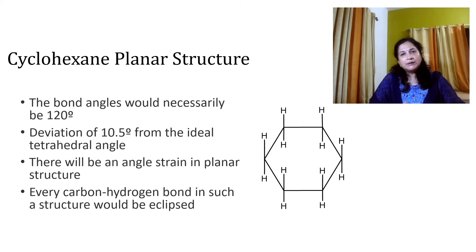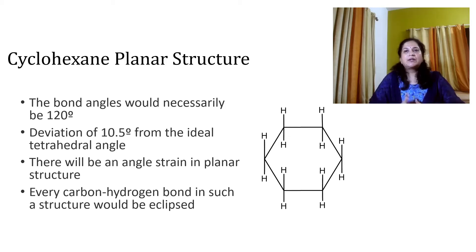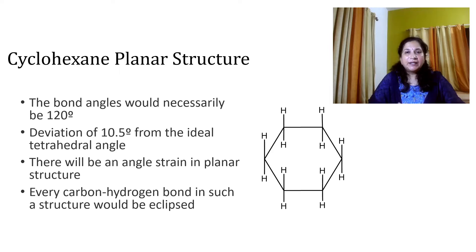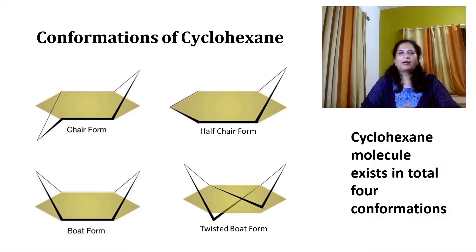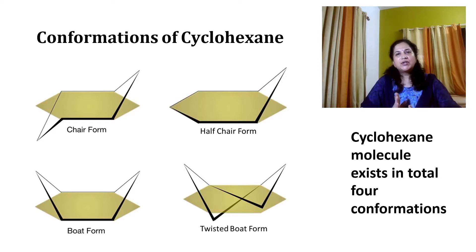This deviation from the normal bond angle introduces angle strain in the planar structure of cyclohexane. Also, since all C-H bonds are eclipsed — meaning they are facing each other — there will be torsional strain. Thus the planar structure of cyclohexane should be unstable, but in practice cyclohexane is a stable molecule. To avoid strain, it attains various non-planar structures; in fact, cyclohexane exists in four non-planar conformations.